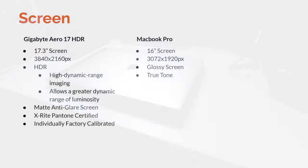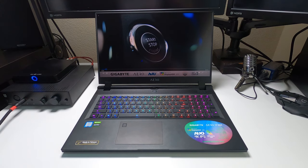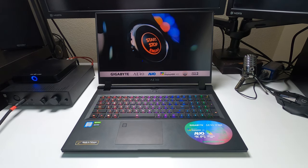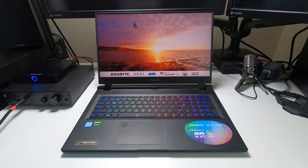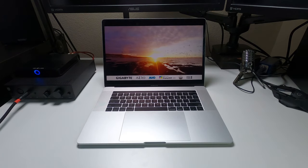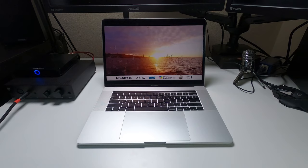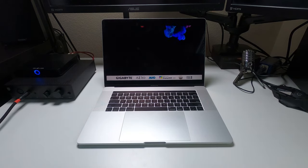The screen is obviously a huge deal for content creation and gaming. The Aero 17 HDR has a 17.3-inch screen versus the MacBook Pro's 16-inch screen. The Aero 17 also has greater pixel density with a resolution of 3840x2160 compared to the MacBook Pro's 3072x1920. Both are such high-resolution screens that the difference is hard to see practically.